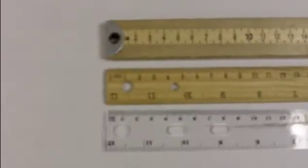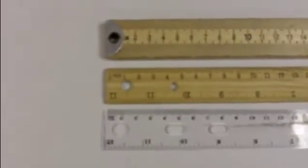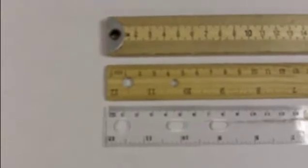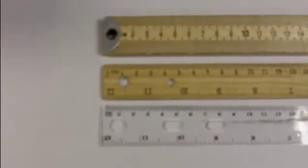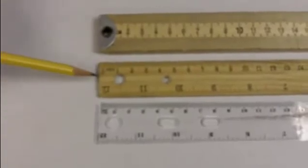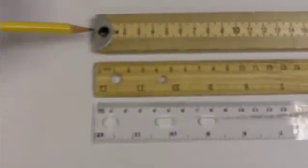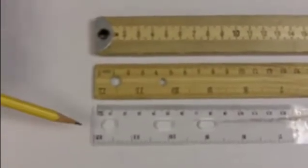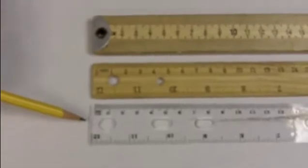Here are three rulers that are commonly used in classrooms. Let's talk a little bit about the precision of each ruler. This is a plastic ruler. Here's a wood ruler, and here's a meter stick.